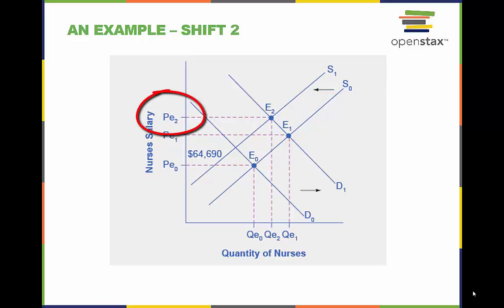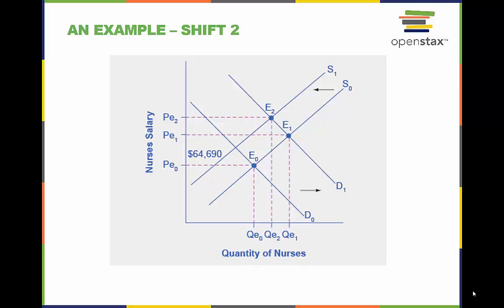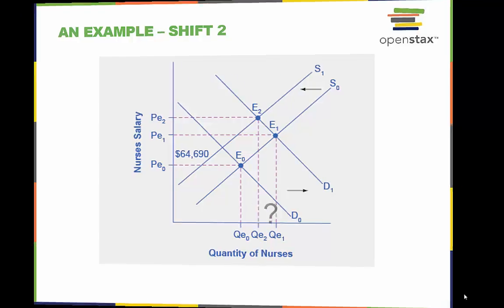But there is an uncertain outcome for the equilibrium quantity of nurses, which in this representation is less than QE1 but more than the initial QE0. However, an increase or decrease is indeterminate.